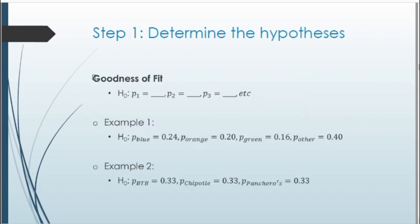Let's see how this process looks for each type of test, starting with step one — determining hypotheses. For chi-squared tests in general, we only need to state the null hypothesis, because the alternative is always just the opposite, so it's redundant to write. For goodness of fit, the null hypothesis states that each proportion equals some certain value. For the M&M example, the null would be: the proportion of blue M&Ms is 0.24, orange is 0.20, green is 0.16, and other is 0.40. For the burrito joint example, since there are three joints, each proportion of preference should equal about 0.33.